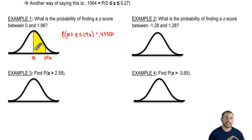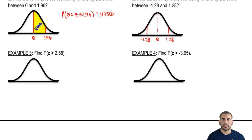What is the probability of finding a z-score between negative 1.28 and 1.28? In this case, we have our zero here with a dotted line, because that's not actually what we're interested in, but that is our midpoint. Then we have 1.28 over here, and we also have negative 1.28 on the other side. What do we do in this situation? Let's start off by just looking up 1.28.